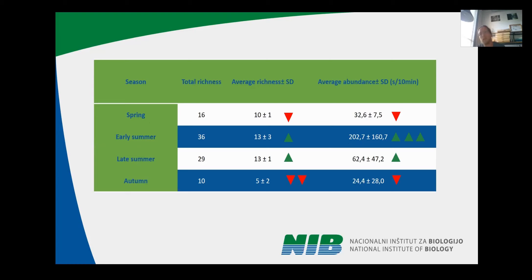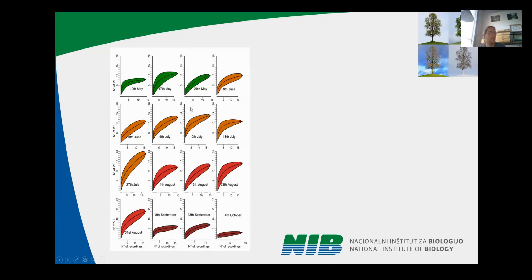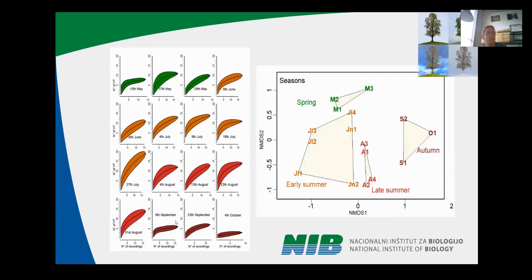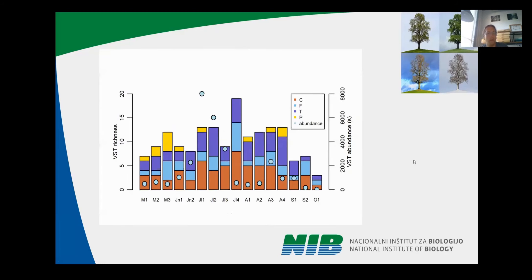For this study, we did recordings for three hours every 10 to 14 days, depending on the weather, as we were choosing nice weather. We calculated accumulation curves and found that even in three hours, almost none of the curves reached the plateau — so if we recorded longer, we would expect more different VTs. Still, even though the vibroscape was undersampled, with NMDS analysis we could observe differences among seasons: spring, early summer, late summer, and autumn were all separated. We also compared richness and abundance and saw no correlation between them during the season.